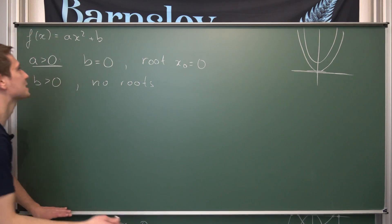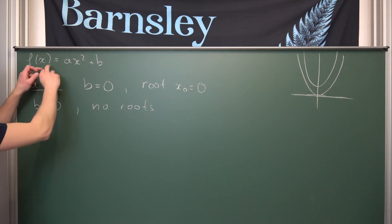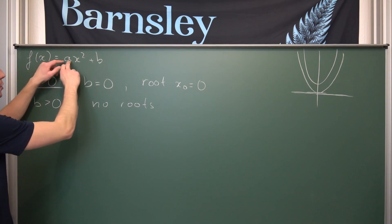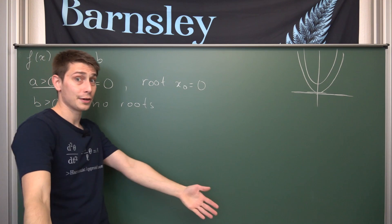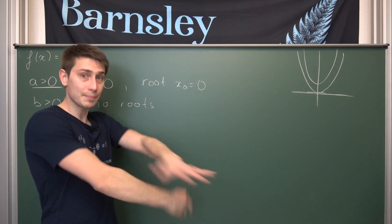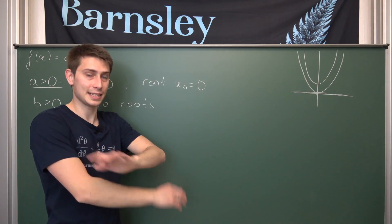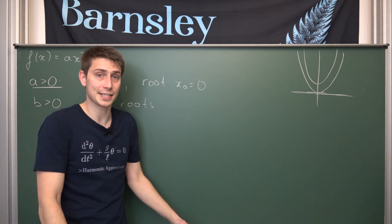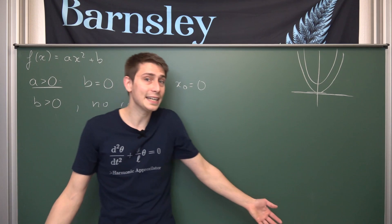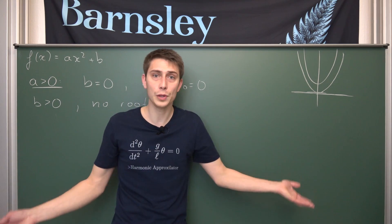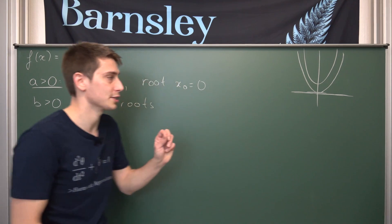So if you encounter a function like f(x) = 2x² + 3, you know immediately that it's not going to have any zeros. If you want to calculate the zeros — it ain't gonna happen. No real roots exist.